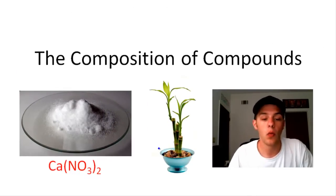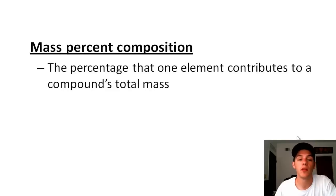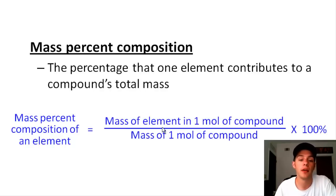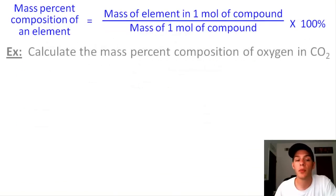One of the main tools that helps us do these kinds of problems is called mass percent composition. Mass percent composition is the percentage that one element contributes to a compound's total mass. To calculate it, you take the mass of the element of interest in one mole of your compound, divide that by the mass of one mole of the entire compound, and multiply by 100 percent.